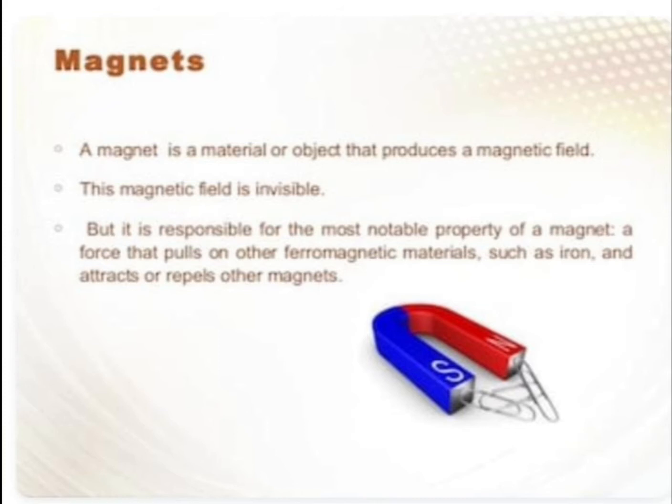What do you mean by magnet? A magnet is a material or object that produces a magnetic field. This magnetic field is invisible, but it is responsible for the most notable property of a magnet — a force that pulls on other ferromagnetic materials such as iron, and attracts or repels other magnets.